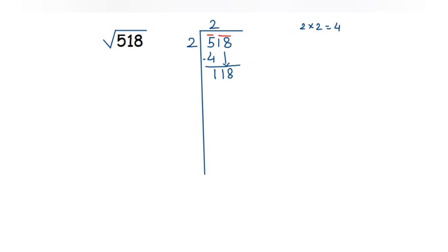In the long division method the divisor keeps changing at every step. The new divisor is formed by taking the digit in the tens place as double the current quotient. The quotient is 2, so double of 2 is 4. Write 4, then find a new digit to place in the ones position of the divisor and also in the quotient — both must be the same digit. We choose it by trial and error.